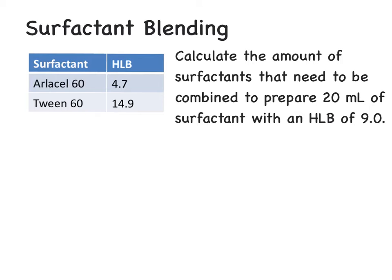This is another way where you might see this type of calculation. In this example, we're combining the same two surfactants, and we want to achieve 20 mL of a surfactant with an HLB value of 9. So we can just set this up using allegation. We'll put our 14.9, our high HLB, top left, 4.7 in the bottom. We want a value of 9.0.